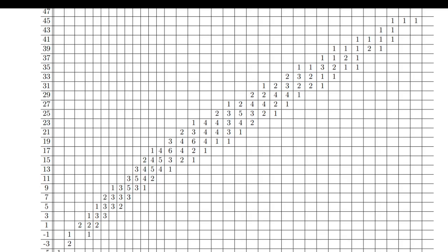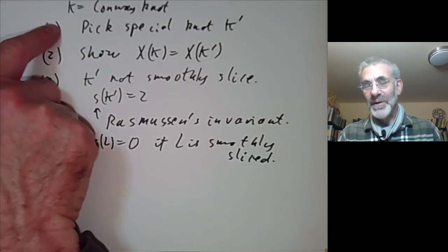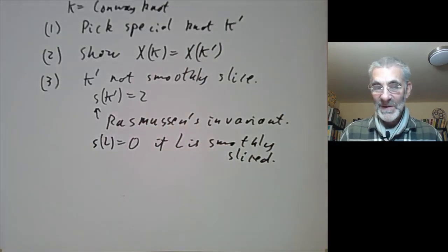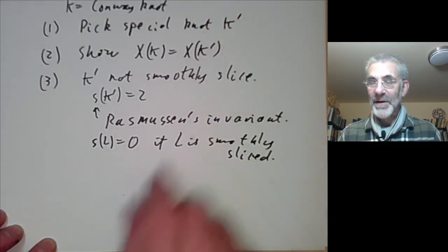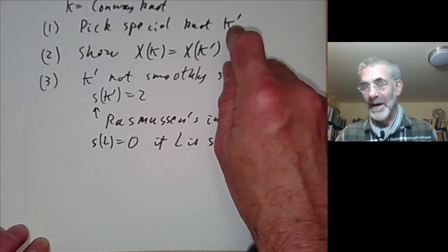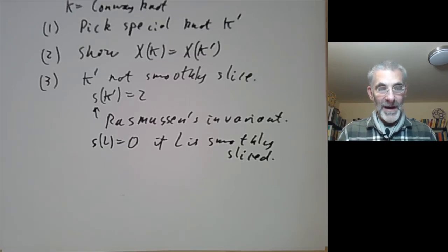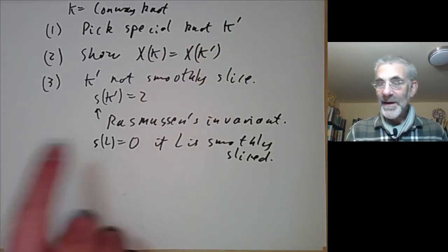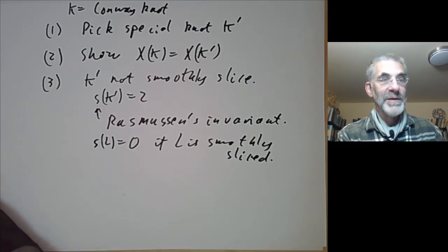Step three is calculating the invariant of the strange knot k prime. That calculation requires computing a large table of numbers to work out Rasmussen's invariant — a highly non-trivial calculation. The proof is one where the overview perhaps doesn't look too difficult, but figuring out the details of these three steps is really rather hairy. I must admit I have no idea how she managed to pick this particular knot k prime — once you've picked it, checking steps two and three is in some sense a reasonably routine calculation. The difficult part is thinking of this process and picking the right k prime. If you want to check the details, I'll put a link to the paper in the description.